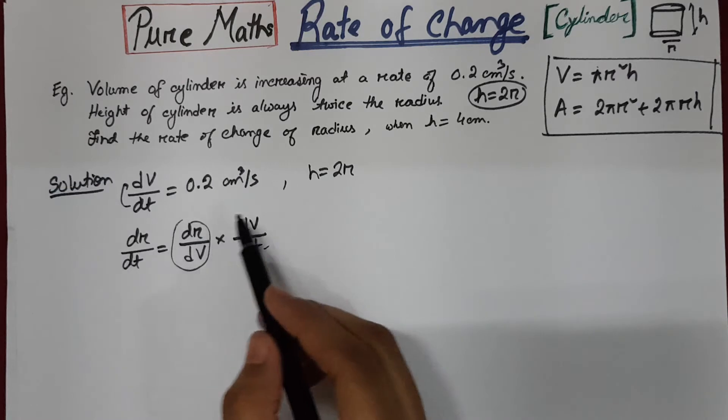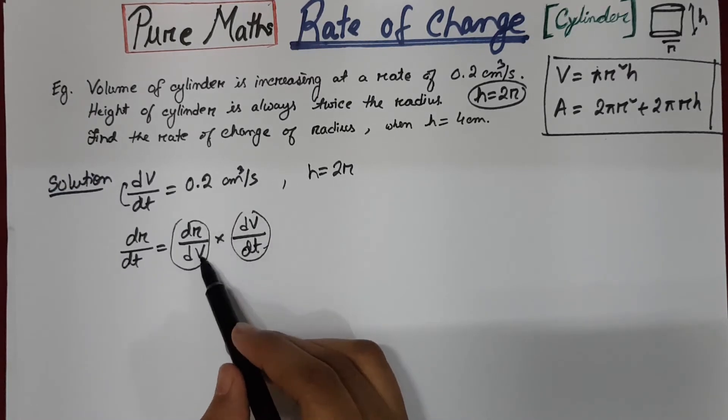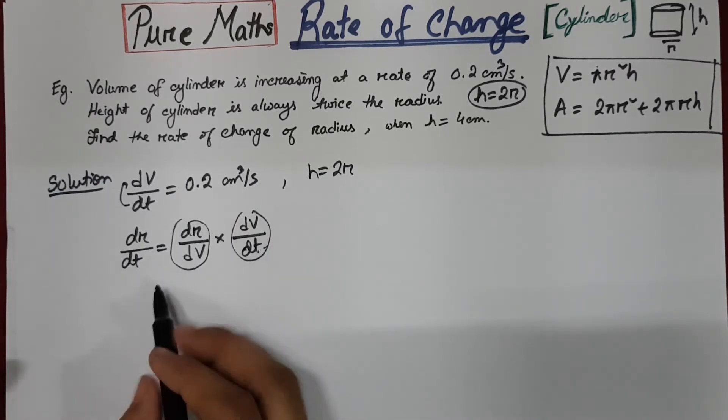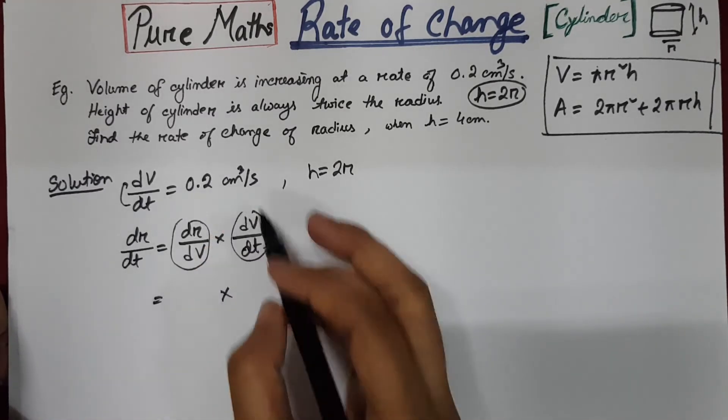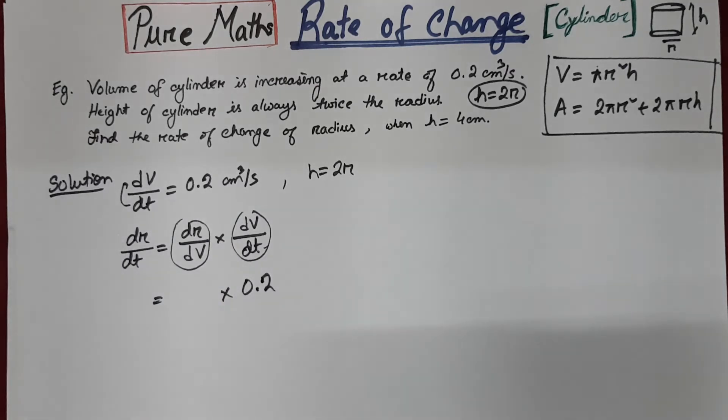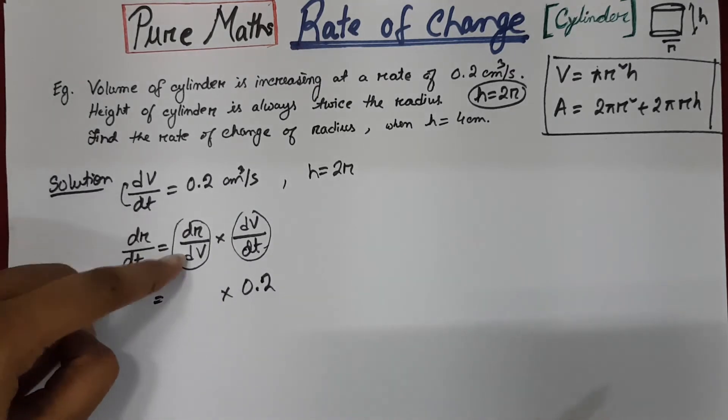So we need to find dr by dv and dv by dt. So you can see that we know the value of dv by dt, which is 0.2. So let's replace this one.